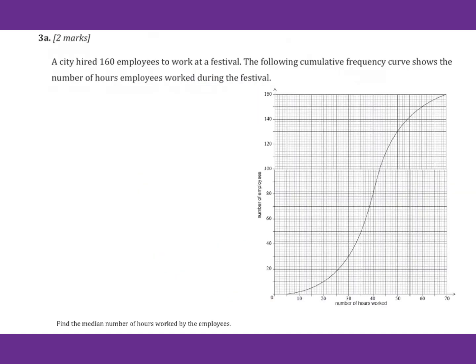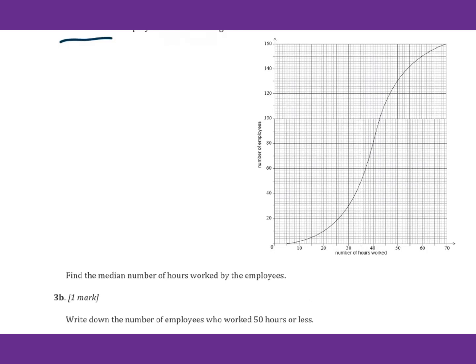For problem 3a, a city hired 160 employees to work at a festival. The following cumulative frequency curve shows the number of hours employees worked during the festival. Find the median number of hours worked by employees. Since this is a cumulative frequency curve, the median, that's 160, we're looking for 80. Then from 80 we go down. You could see 40 hours.